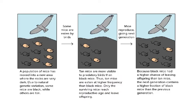Please go through this example with me and I will explain how this whole thing evolves. First, we have a population of mice that move into a new area where the rocks are very dark. Due to natural genetic variation, some mice are black and some are tan. The tan mice are more visible to predatory birds than black mice, so the tan mice are eaten at a higher frequency. Only the surviving mice reach reproductive age and leave offspring. Because black mice had a higher chance of leaving offspring than tan mice, the next generation contains a higher fraction of black mice than the previous generation.